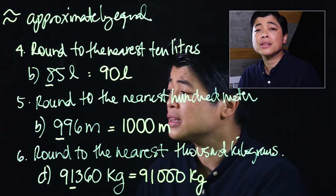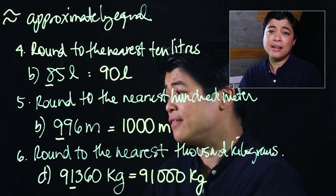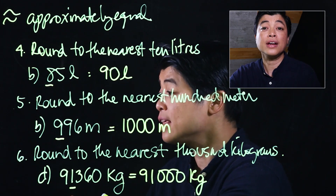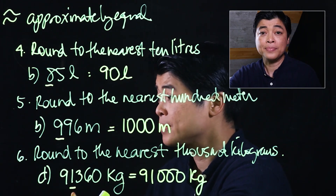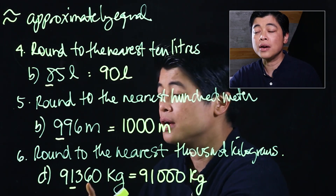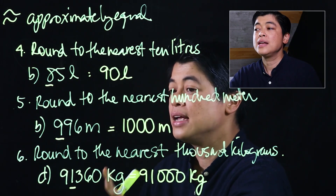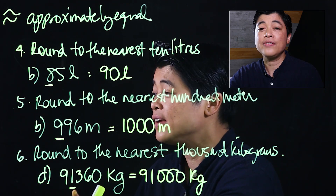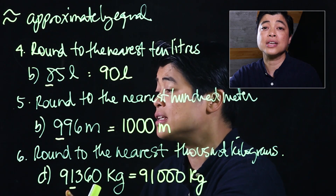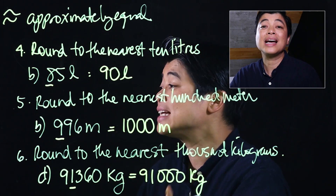The way the book does it is by drawing a number line, which I believe is too stressful for the kids to visualize. The strategy for these types of questions: underline and then look at the digit after the underlined value. If it's five or more, increase the underlined digit and everything thereafter becomes zero. If it's four or less, it stays the same and everything thereafter becomes zero. That's type one.